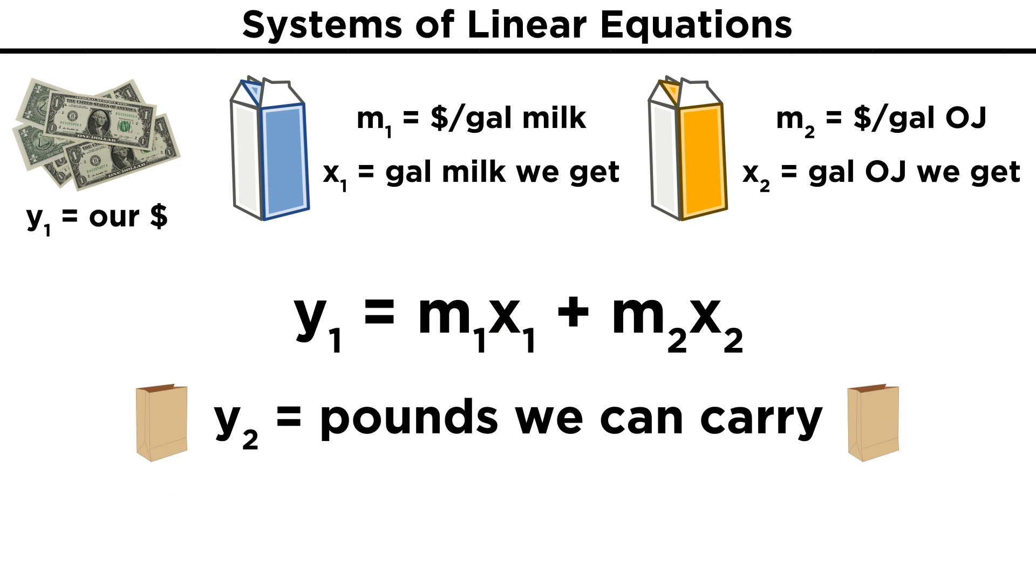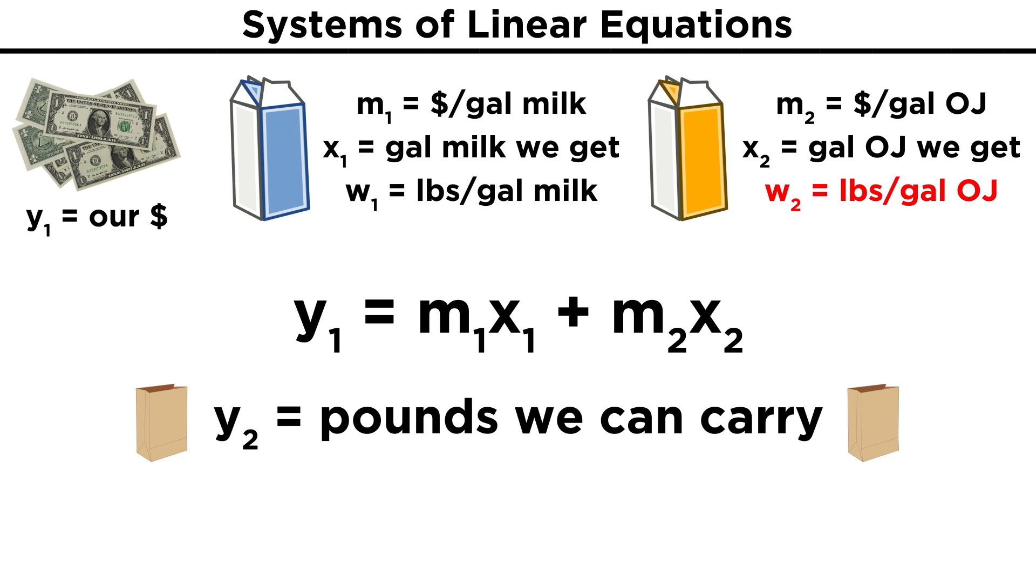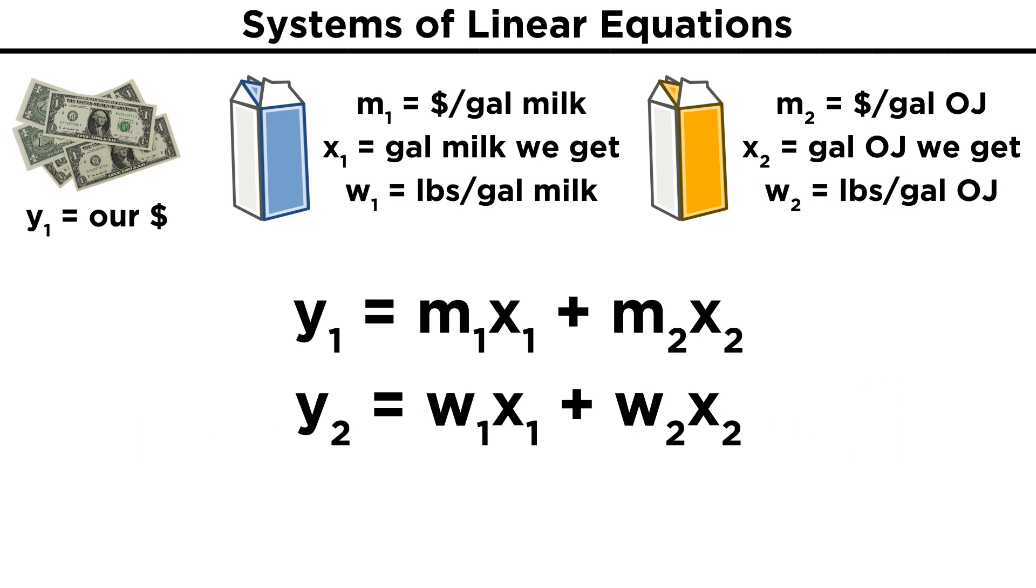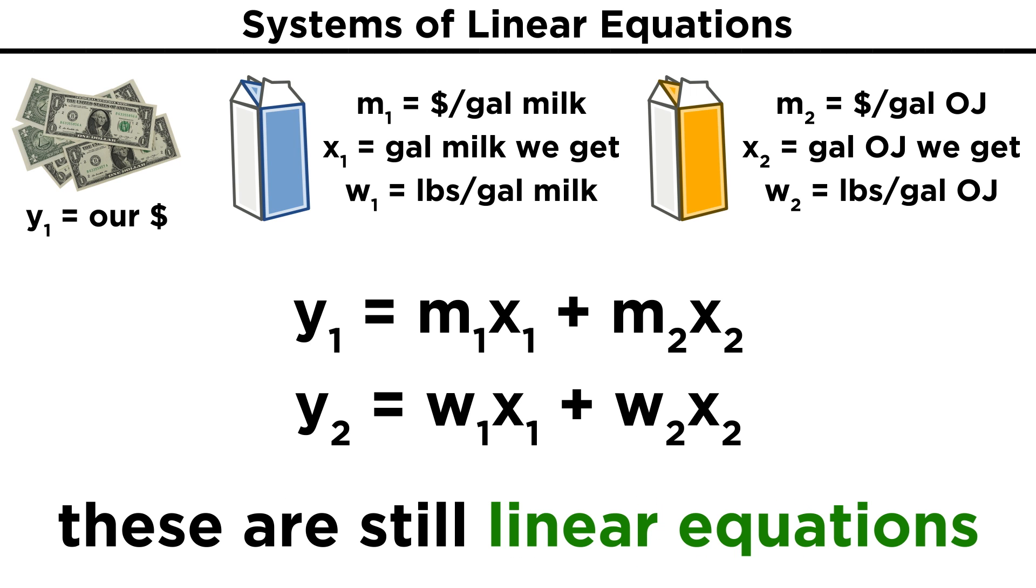Now let's throw another parameter in there. Let's say we can only carry y₂ pounds of stuff home with us. Milk weighs w₁ pounds per gallon, and orange juice weighs w₂ pounds per gallon. That means that y₂ equals w₁x₁ plus w₂x₂. Now we need values for x₁ and x₂ that satisfy both equations simultaneously. So things are starting to get a little more complicated, but let's note that each of these is still a linear equation.